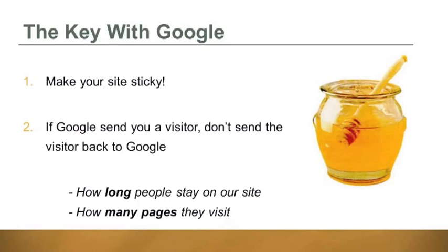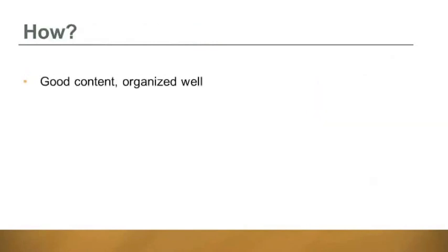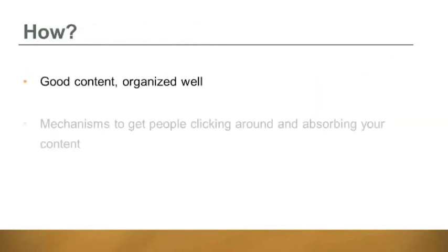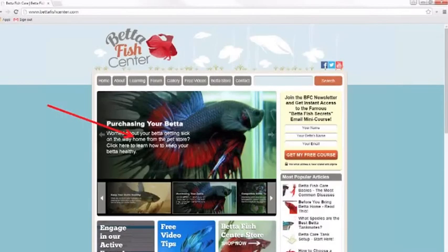Google is tracking things specifically like how long people stay on your site and how many pages they visit — those are two big ones. Getting people on your site, staying there, absorbing your content, and clicking around — those are the keys. Good content organized well, and then mechanisms to get people clicking around and absorbing your content.